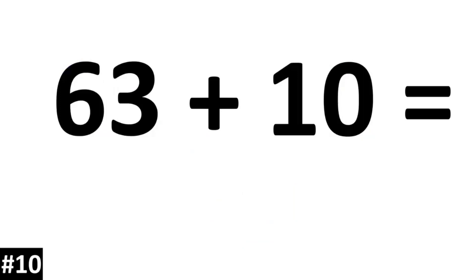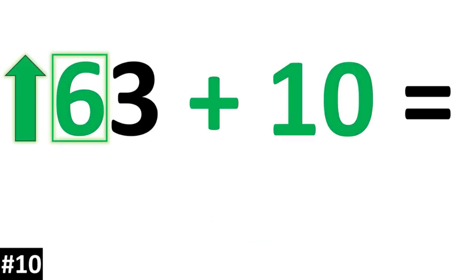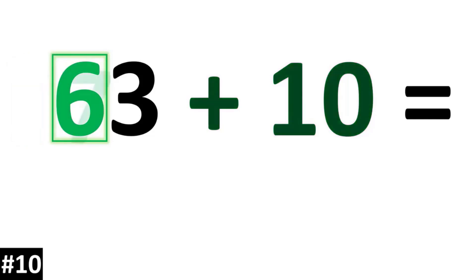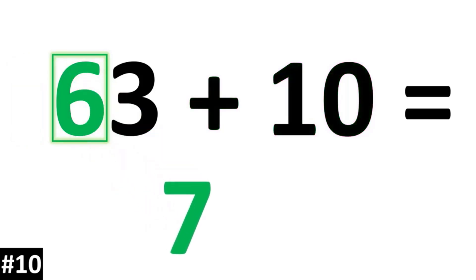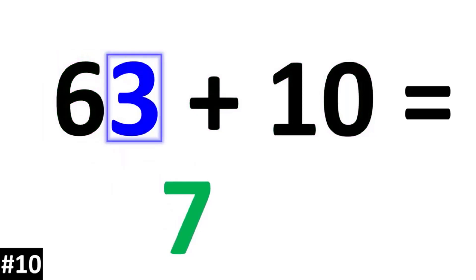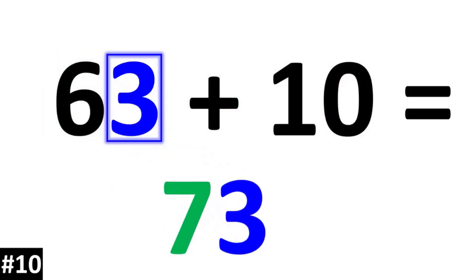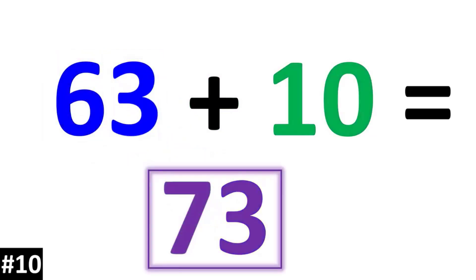How about this one? 63 plus 10: the tens digit is going to go up by 1, so the 6 becomes a 7. The ones digit stays the same. 63 plus 10 is 73.